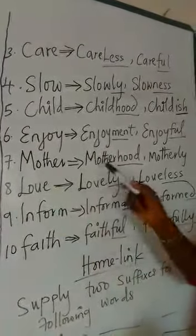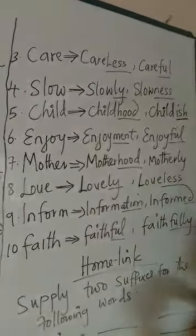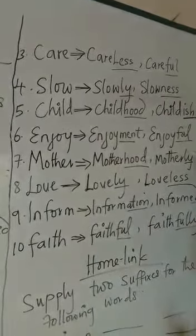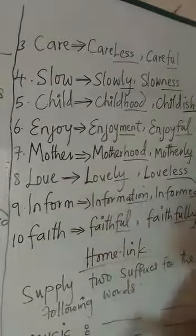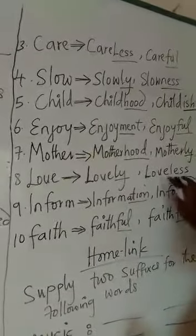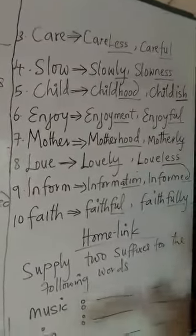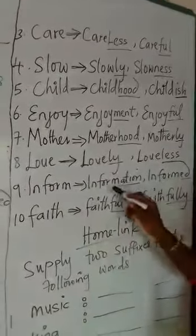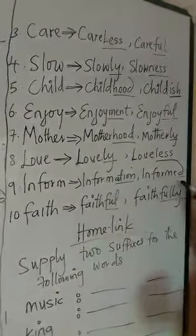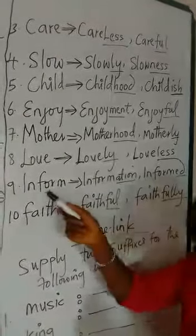Next is 'mother', giving us 'motherly'. The suffix there is L-Y. Then 'love' gives us 'lovely' and 'loveless'. The suffix in 'loveless' is L-E-S-S. Next is 'inform', giving us 'information' — the suffix is serving as the suffix there. Also 'informed', where E-D is also serving as the suffix of the word.